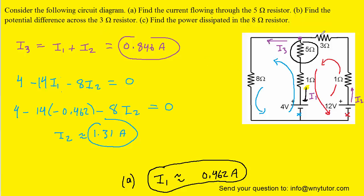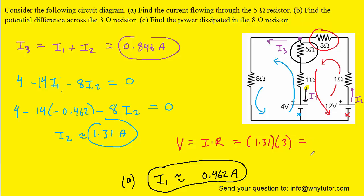For Part B, to find the potential difference across the 3 ohm resistor, we note that current I2 flows through it. The potential difference equals the current multiplied by the resistance: I2 times 3 ohms gives approximately 3.92 volts. That is the correct answer to Part B.